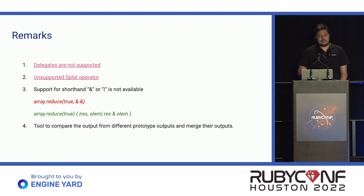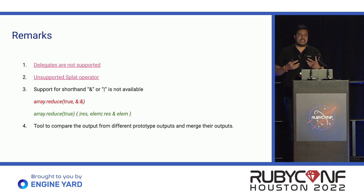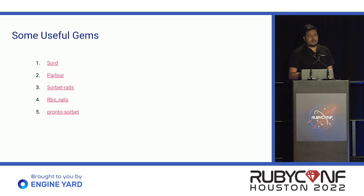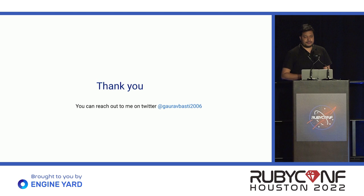There are a few things still not supported in RBS — it's in active development so these are expected. One thing I feel is that there should be a tool to compare the output of syntactical parsing and runtime code generation to see which has better resemblance to our code. There are also some useful gems for generating annotation code: SORD, Parlour, Sorbet Rails, RBS Rails, and Pronto Sorbet. That's it, thank you.